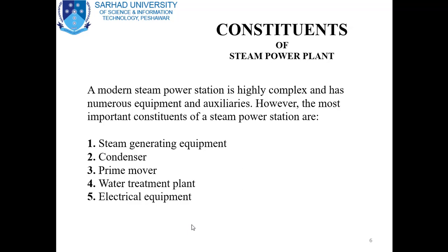The five main constituents are: number one, steam generating equipment; number two, condenser; number three, steam turbine; number four, water treatment plant — which includes filtration, cooling, settling, pumping, and feeding into the economizer; and number five, electrical equipment — which includes transformers, circuit breakers, bus bars, and exciter.